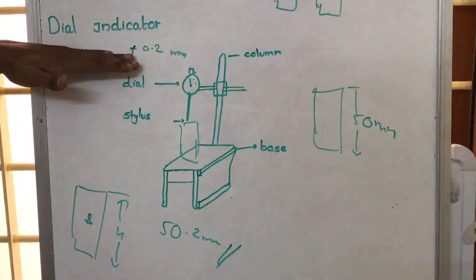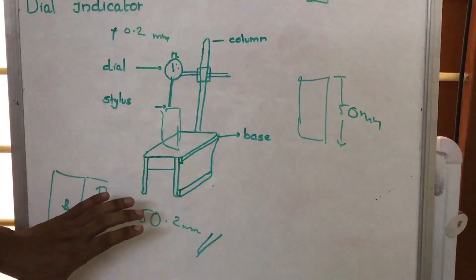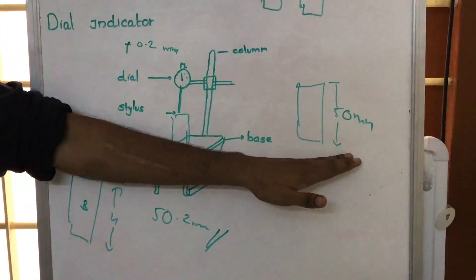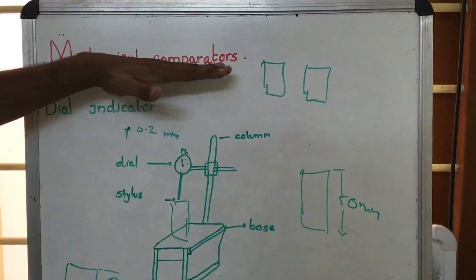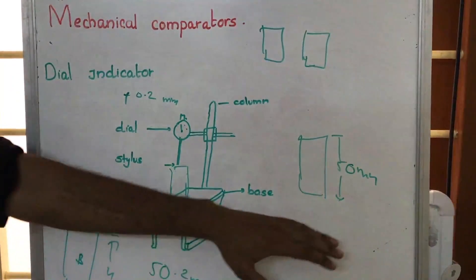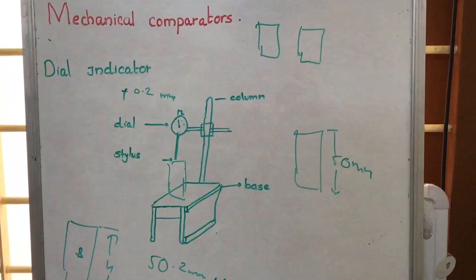to measure dimension of a given body. And for that, we will be making use of a reference whose dimension is known. So that's what about dial indicator. It's called comparator since we are comparing the dimension of these two bodies. A known reference body and another body whose dimension is to be determined.